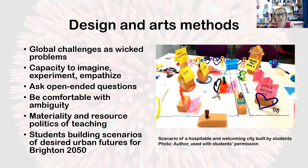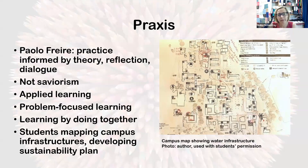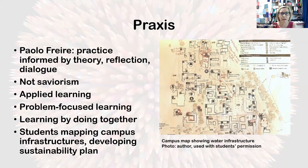My example is students building scenarios of what they imagine Brighton 2050 to look like, and then thinking through the different steps they would need to take to work with others to get there. This leads into the third strand, which is the notion of praxis — informed by Freire's writing of practice that is informed by theory, reflection, and dialogue with others. This interlinking of theory and practice is really important for our discipline of international development, where the idea of saviorism — or expert saviorism — can be quite dominant, and the theoretical reflection on practice is really important to counter that.